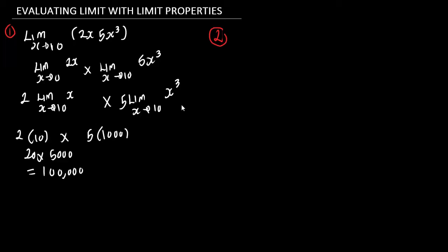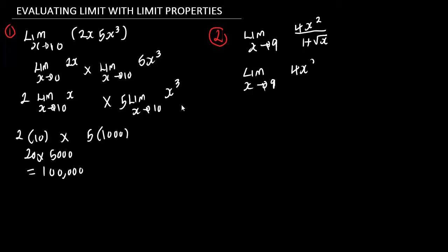Now let's take a look at another example. We want to evaluate the limit as s approaches 9 of the function 4s squared divided by 1 plus the square root of s. We are going to use limit properties to evaluate this. As you can see, we are having a quotient of two functions, meaning we are going to use the quotient rule. This is going to be the limit as s approaches 9 of the top function 4s squared, divided by the limit as s approaches 9 of the denominator function 1 plus the square root of s.